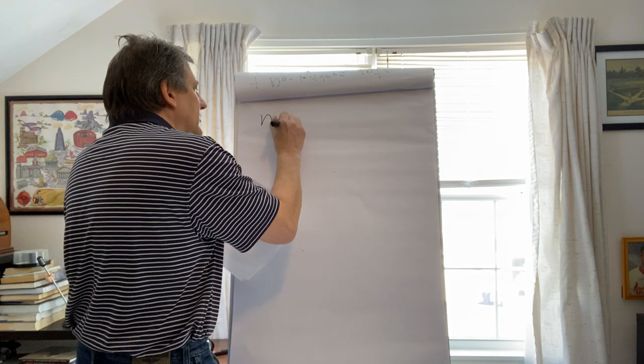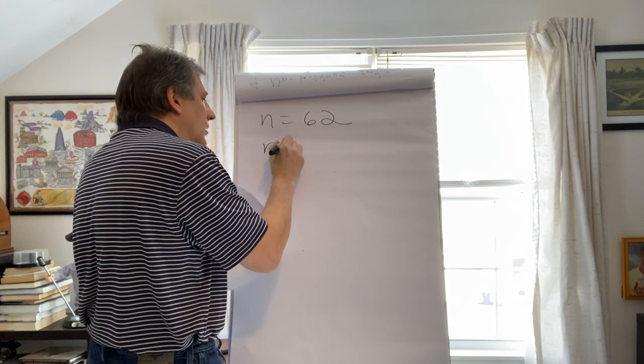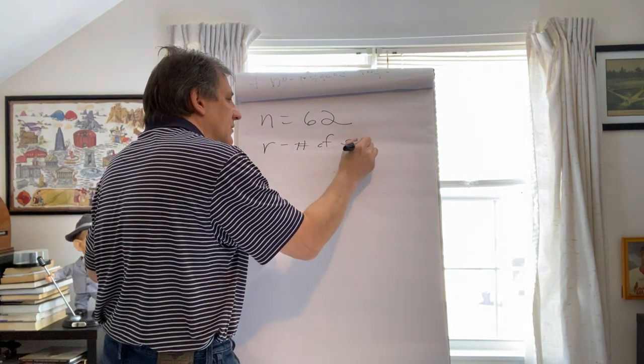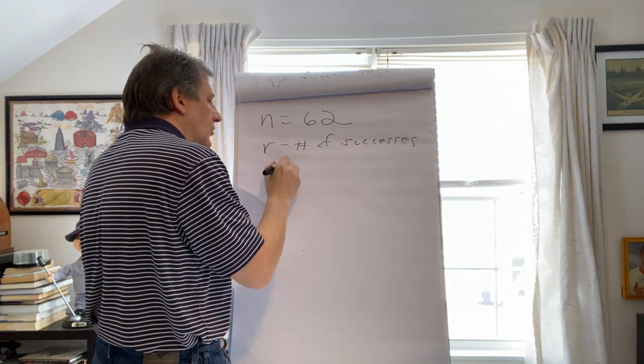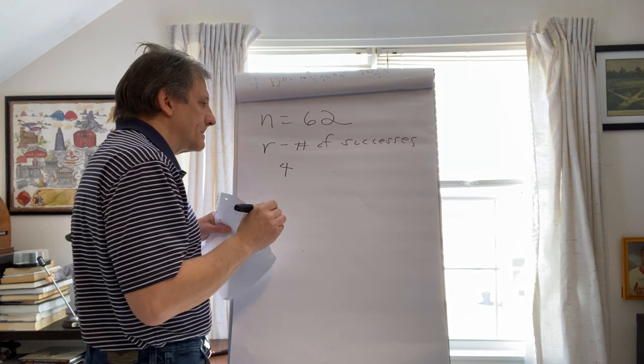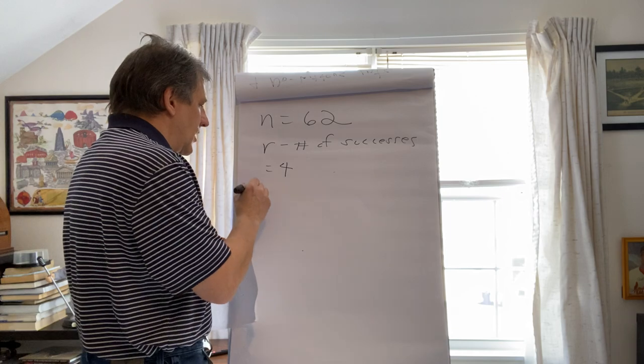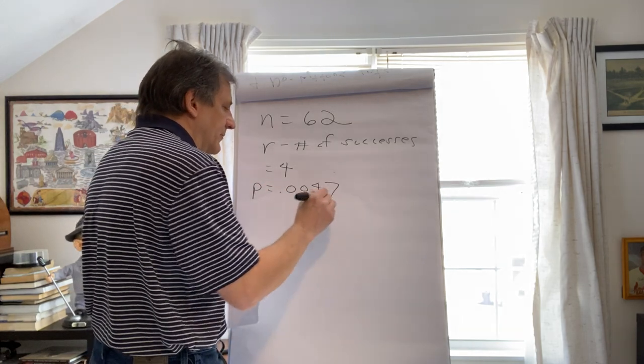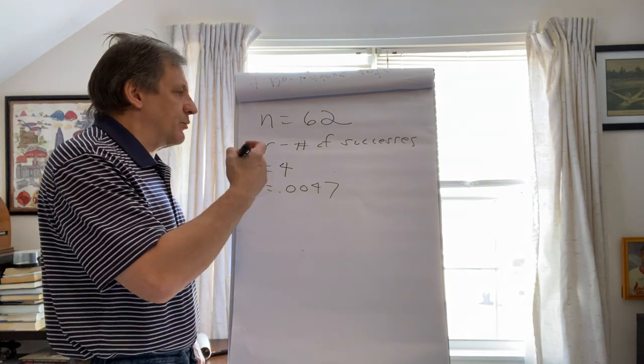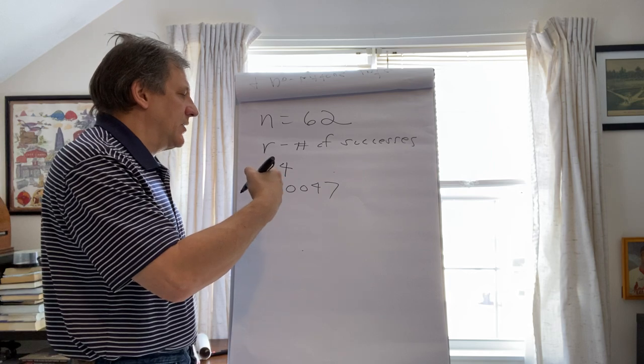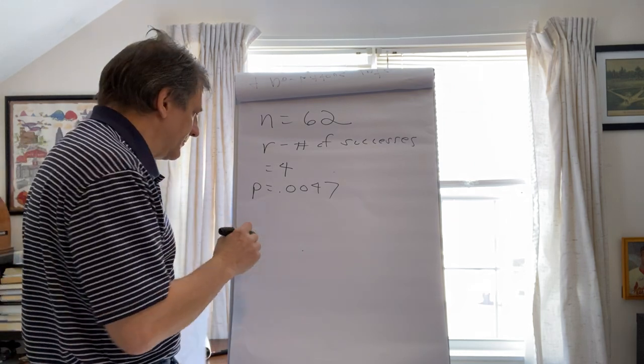So, n is 62. R, which is the number of successes, is 4, equal to 4, because he took 4 no-hitters into the 8th inning. And we know that P is equal to 0.0047. Now, first I'm going to go over the probability of finding exactly 4 successes, but then we're going to deviate from that a little bit.